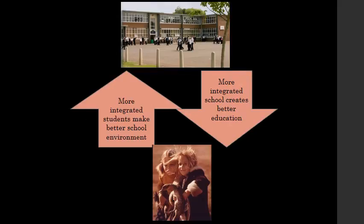Let's illustrate that with the example of the school. The school is composed of students. On the one hand, more integrated students make a better school environment, because the students are more likely to see the value of the education they're being offered and less likely to disrupt it. On the other hand, a more integrated school also creates better education for the students. A more integrated school might mean one where the management or government that runs the school is in harmony with the values of the teachers who actually deliver the education. That means there's more likely to be a consistent approach which takes into account the different needs of the students, and students are more likely to successfully learn in that context.